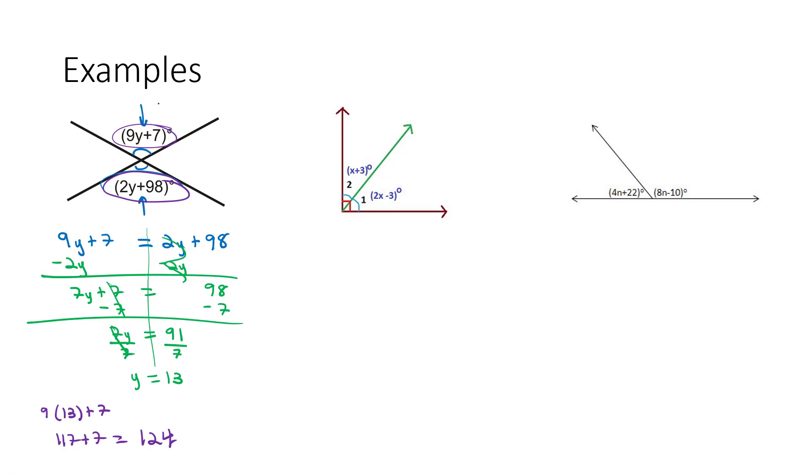So that angle is 124 degrees. And we know the vertical angle across from it is going to be exactly the same measure, 124 degrees. And if I were to plug the 13 into the 2 times y plus 98, I would also get 124 degrees. So that one is correct.